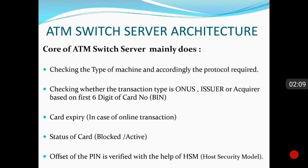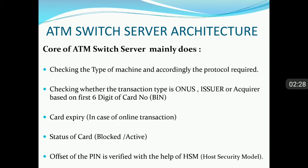Based on the machine make, the appropriate protocol is applied to the transaction. It then checks whether the transaction is of on-us type, issuer type, or acquirer type. This is determined based on the first six digits of the card number, also called the BIN or Bank Identification Number.